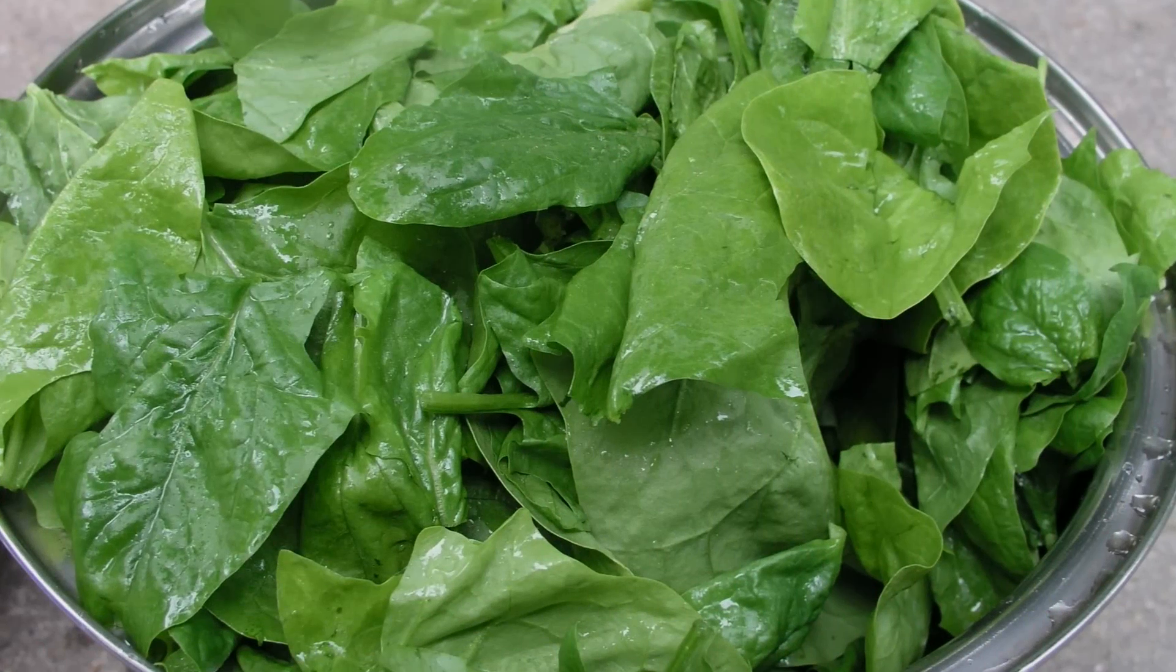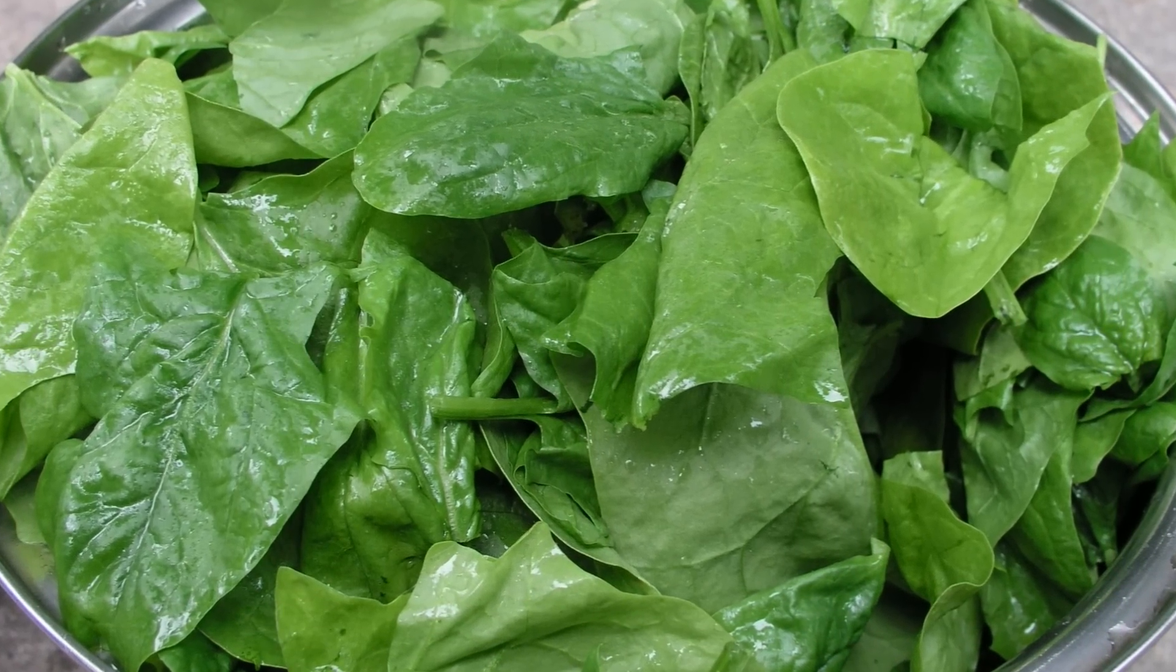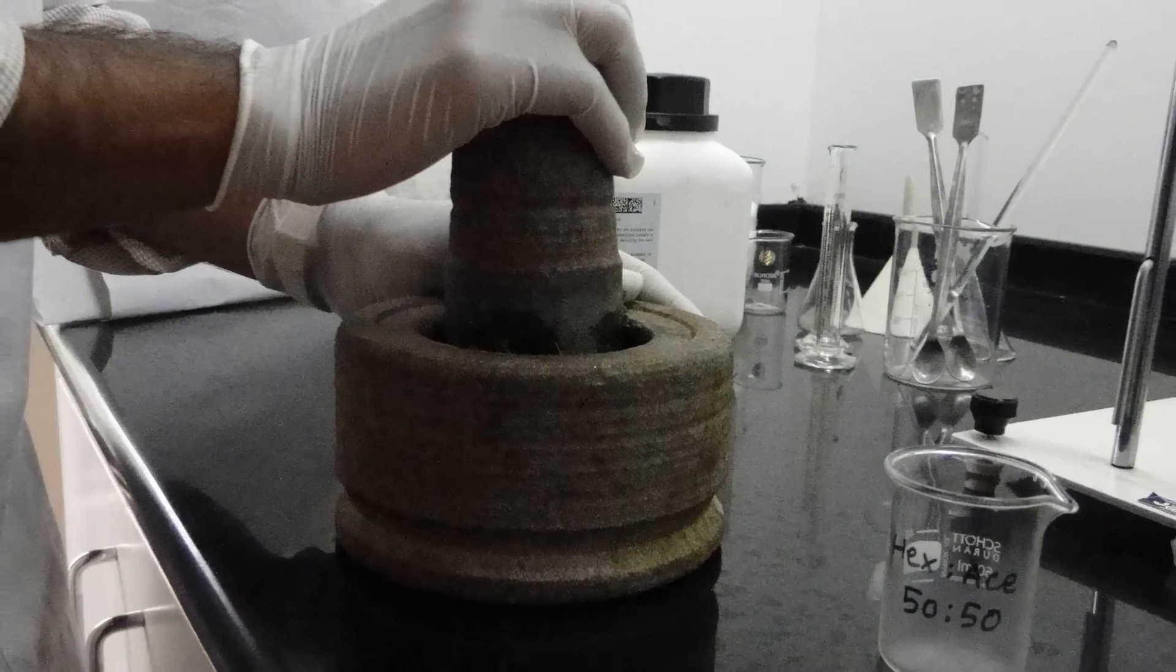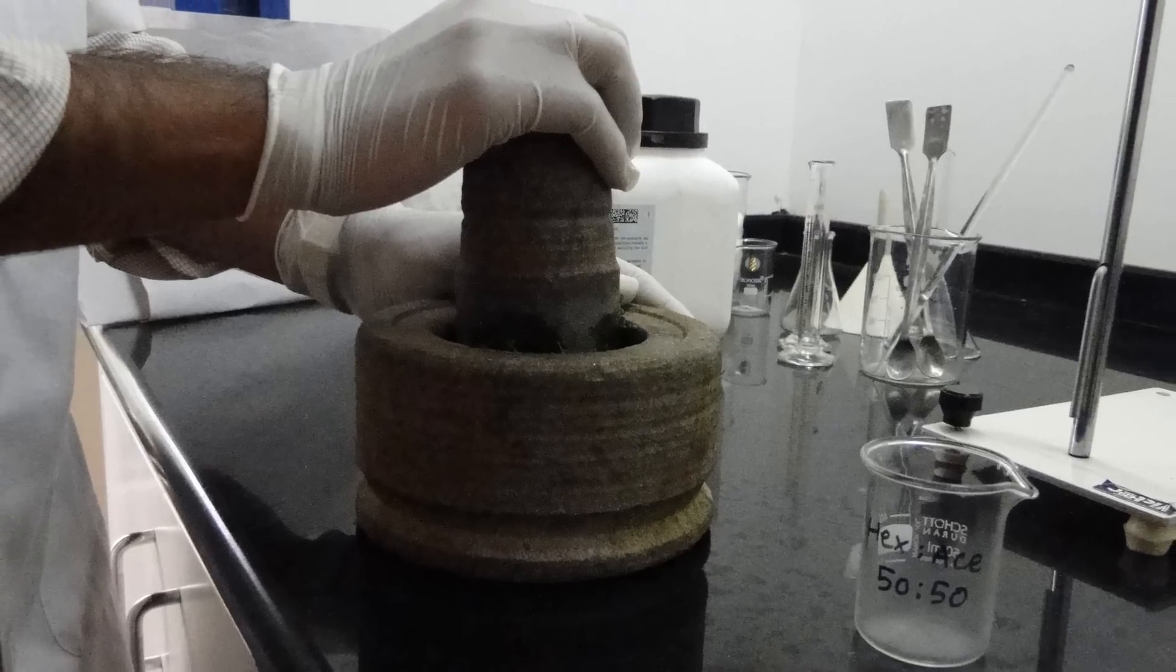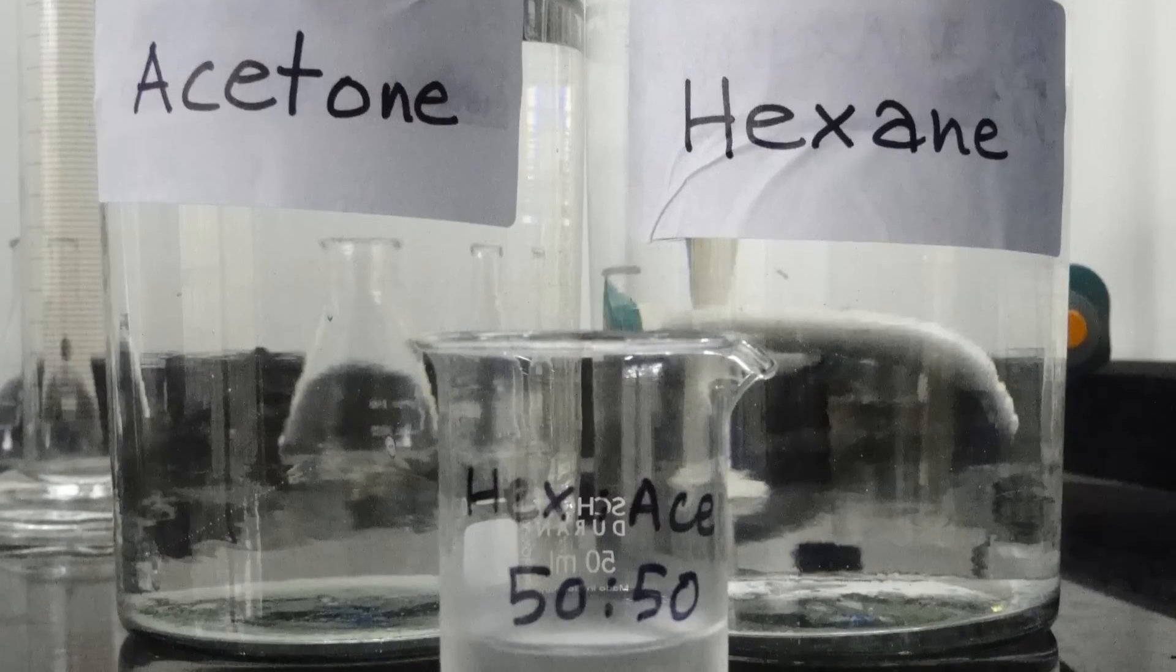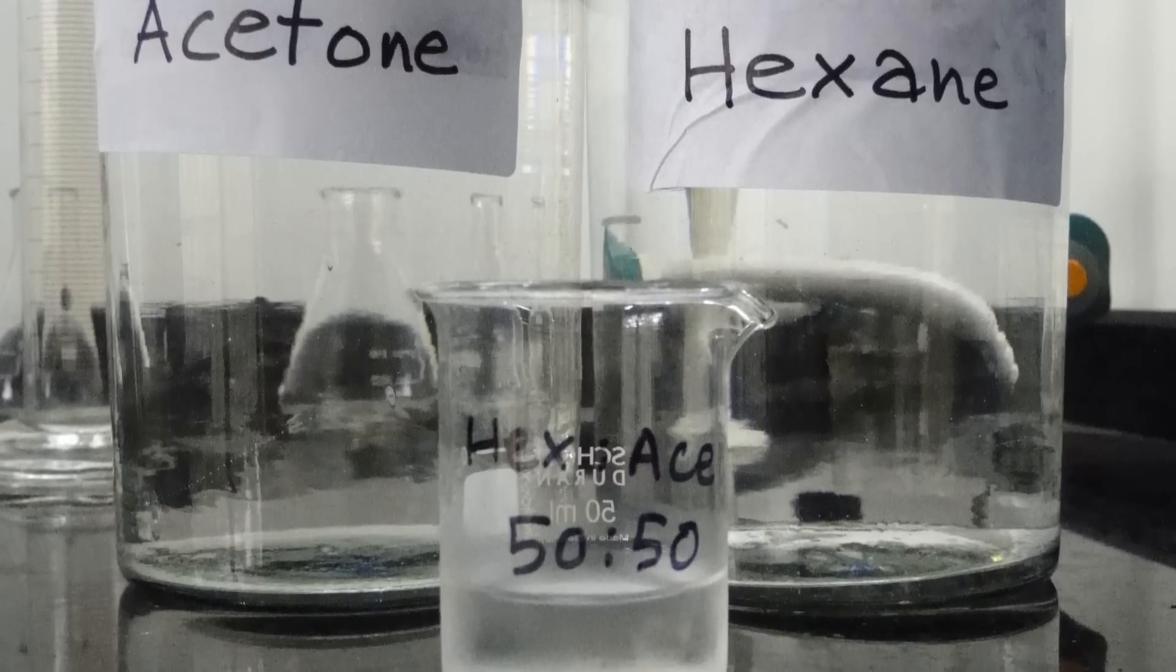The spinach extract is prepared by first grinding fresh spinach using a mortar and pestle and then extracting it with hexane-acetone mixture in the ratio 1 to 1.